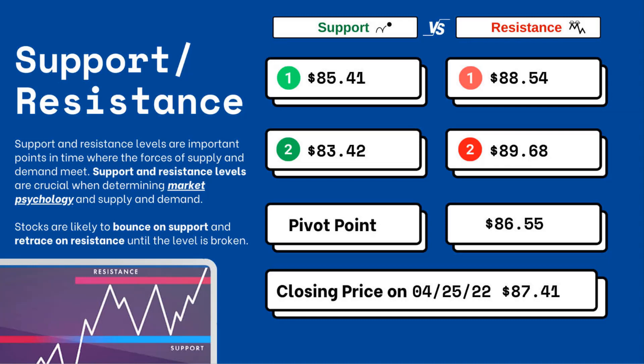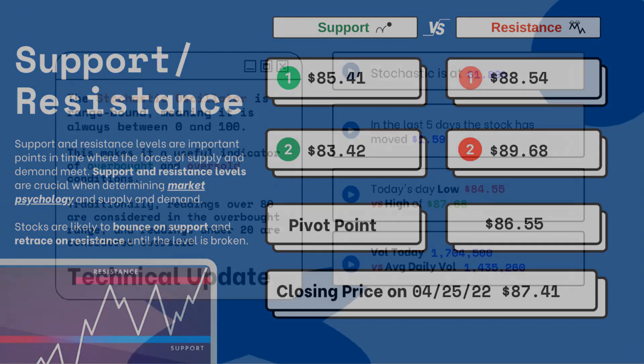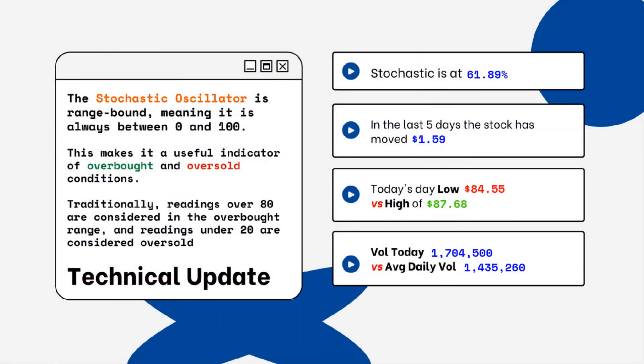These are areas that you want to watch when looking at this particular stock. Stocks typically bounce at support levels and resist at resistance levels, meaning they'll retrace from that top level. You can also see the stochastic level on the right side — this is a technical update where you look for overbought and oversold conditions. Readings over 80% are considered overbought.